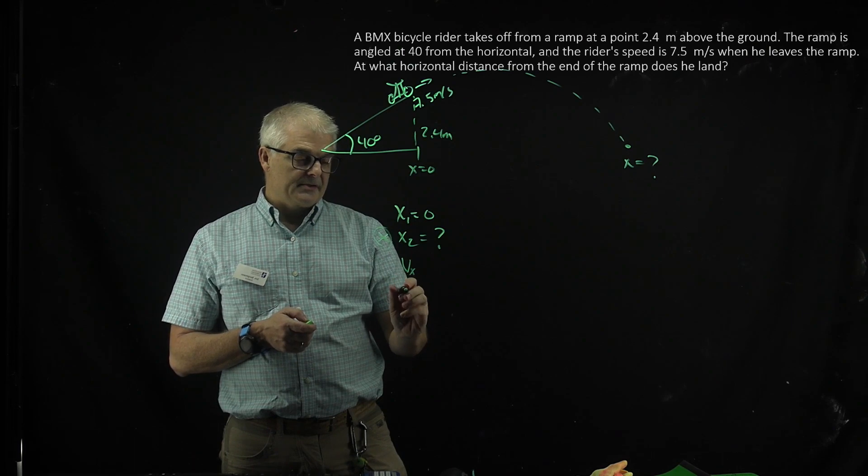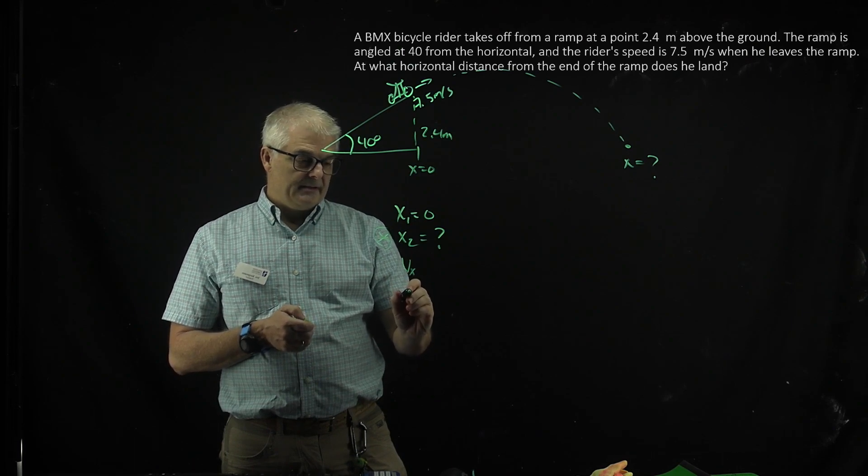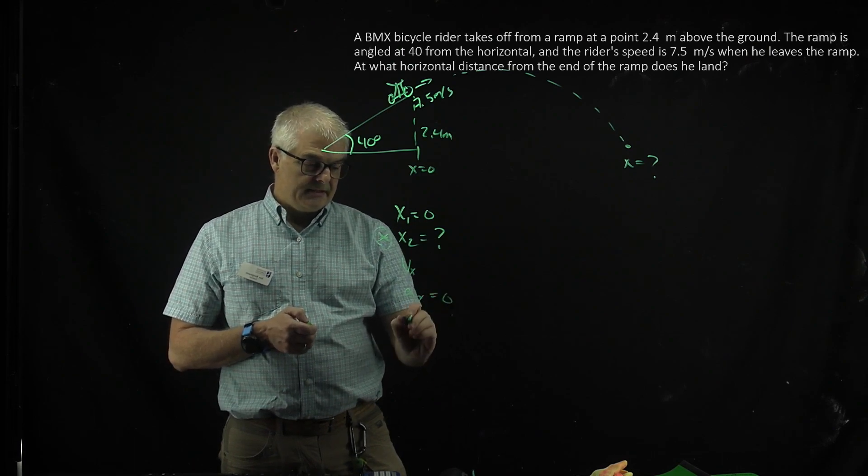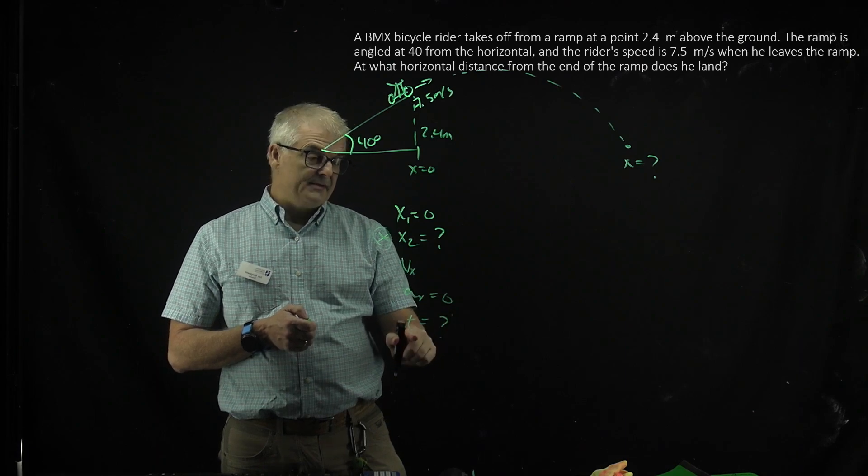Vx, now we need to talk about this. Ax is 0, and t equals question mark. You have to find the t.